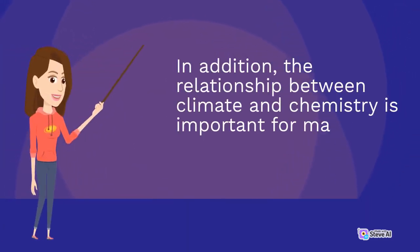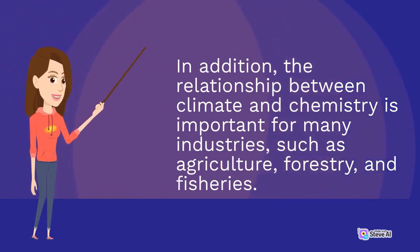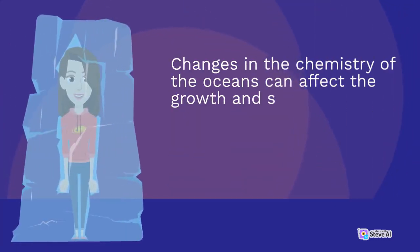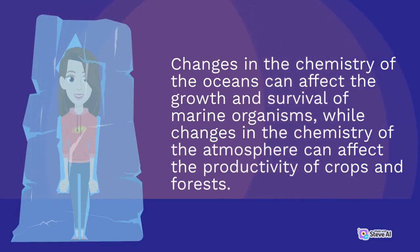In addition, the relationship between climate and chemistry is important for many industries such as agriculture, forestry, and fisheries. Changes in the chemistry of the oceans can affect the growth and survival of marine organisms, while changes in the chemistry of the atmosphere can affect the productivity of crops and forests.